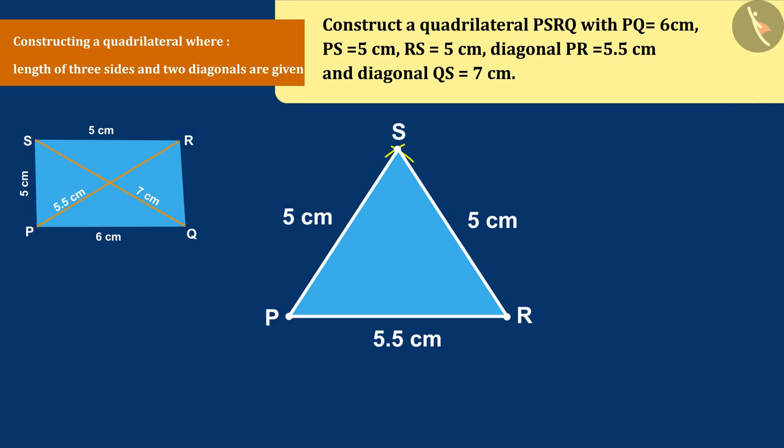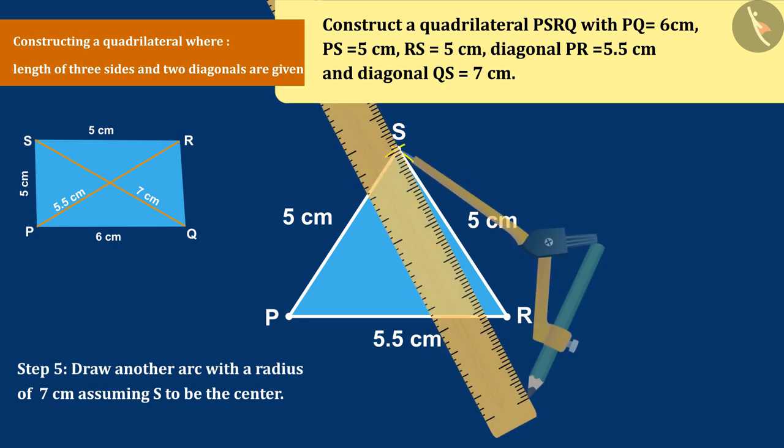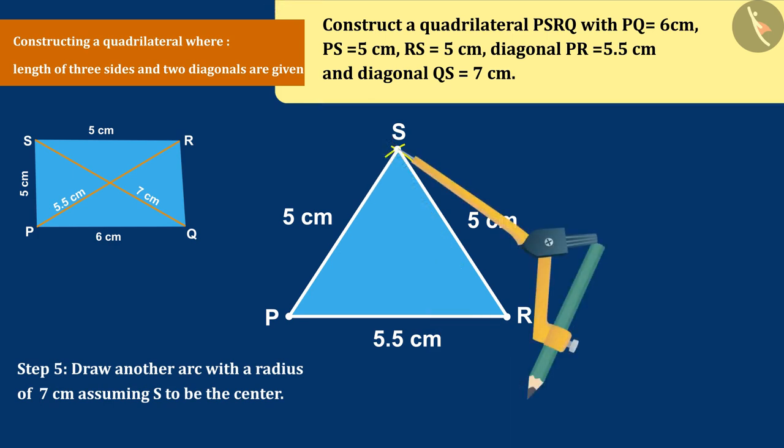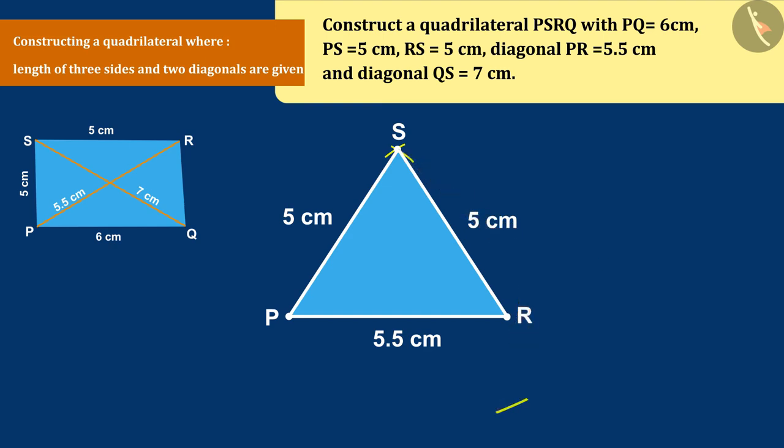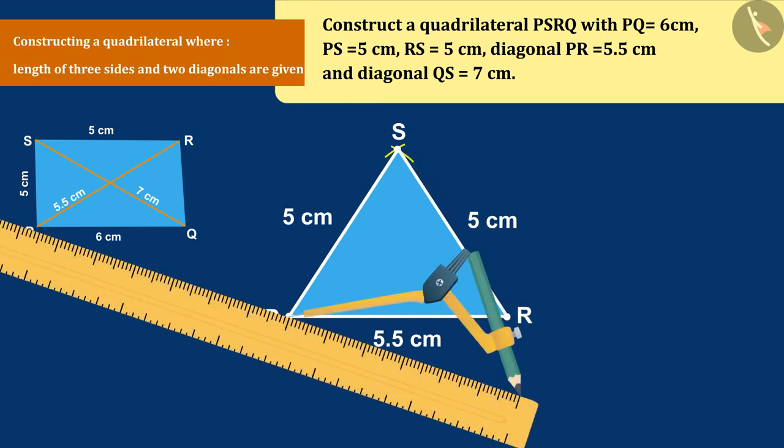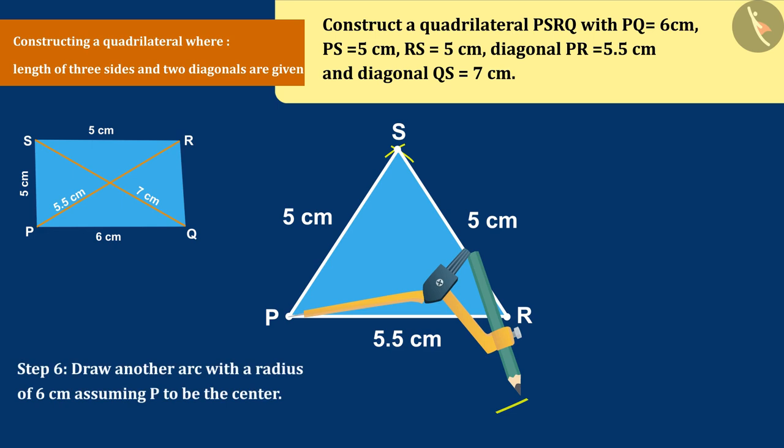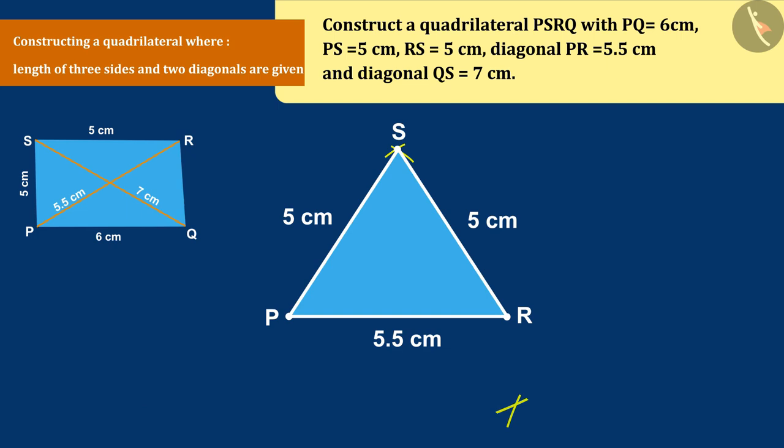Since we are given the measurements of the sides RQ and QS in the question, we first draw an arc of radius 7cm with point S as center and then make an arc of radius 6cm taking point P as center. On whose intersection, we get Q as an imprinted point.